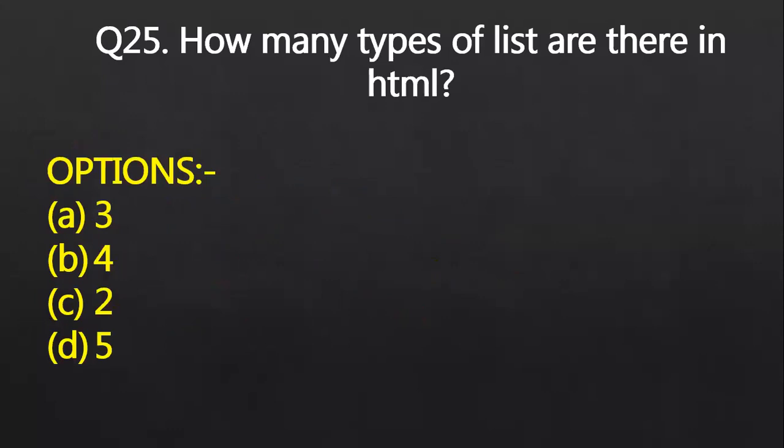How many types of list are there in HTML? That is the three types. Which one? Ordered, unordered, definition. Nested list is not a type of list. We will combine the rest of the three types.